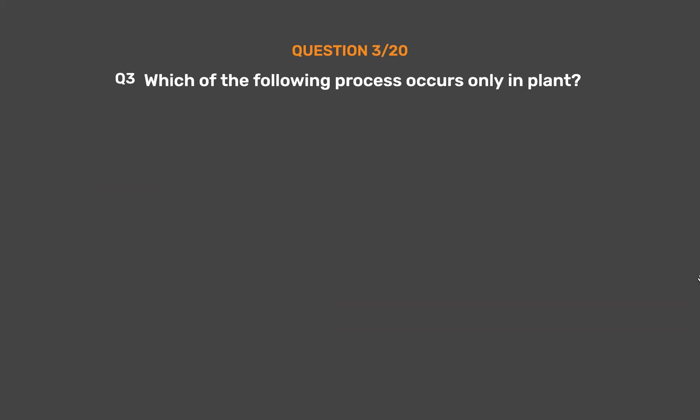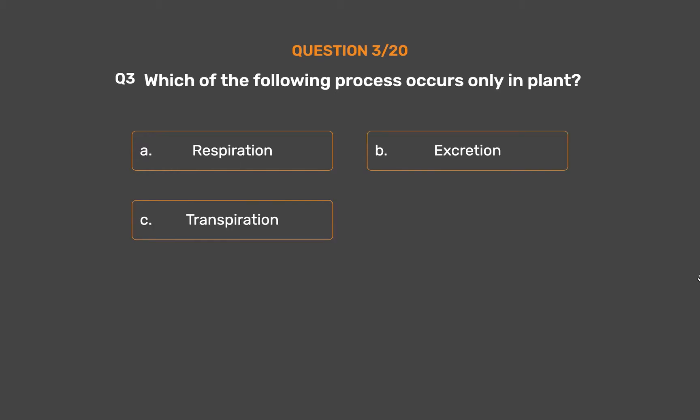Question 3. Which of the following processes occurs only in plants? Option A: Respiration. Option B: Excretion. Option C: Transpiration. Option D: Digestion.